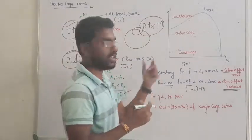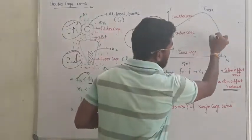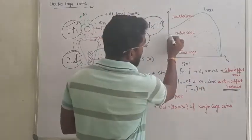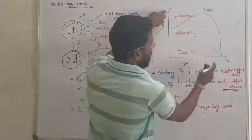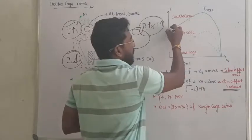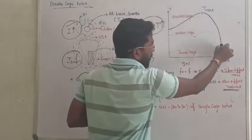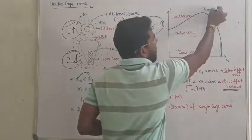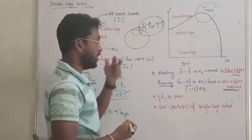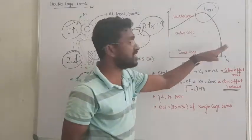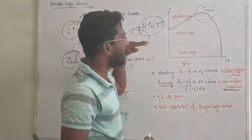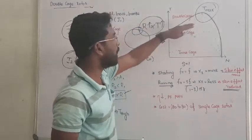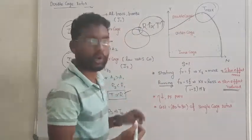So if you are seeing the torque characteristics, this is the torque characteristics of inner cage alone. This is the torque characteristics of outer cage. That is torque versus slip curve. Overall torque characteristics, it has been improved a lot. So we are obtaining maximum torque.